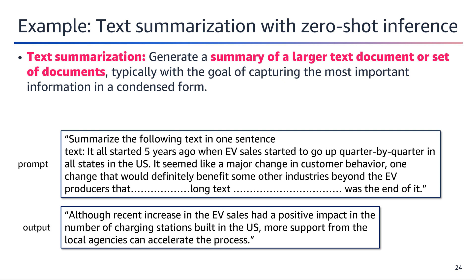Text summarization is the process of generating a concise summary that captures the most important information from a larger text document or set of documents. The goal is to distill key points and essential details into a condensed form while preserving the overall meaning and context of the original text. This task is particularly useful when dealing with large volumes of textual data. The slide provides an example of text summarization with zero-shot inference, where a longer text about the increase in EV sales is summarized into a single sentence.